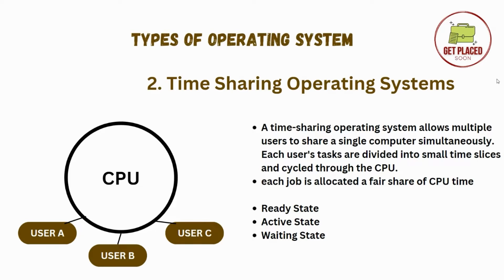For example, if user A gets 10 milliseconds, user B gets also 10 milliseconds, and user C also gets 10 milliseconds. If a task needs to wait — for example, user A wants to save the file and has to wait — it goes to the waiting state and the CPU serves other tasks like B and C.